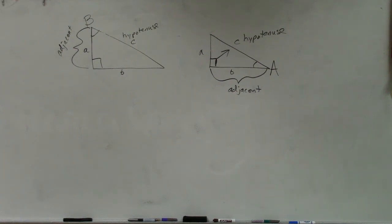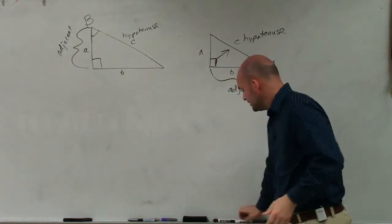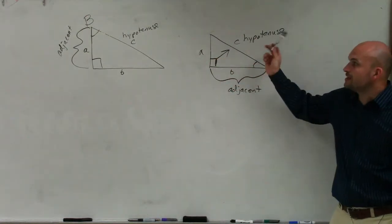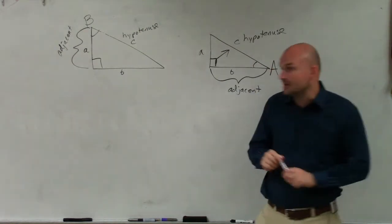So now, the next side leg that I like to talk about is what we call the opposite leg. So obviously, gentlemen, if we already know a hypotenuse, and if we can already figure out the adjacent, then the opposite has to be the other leg.